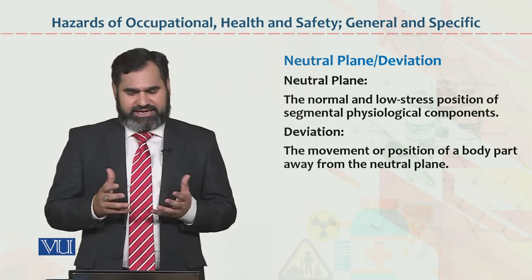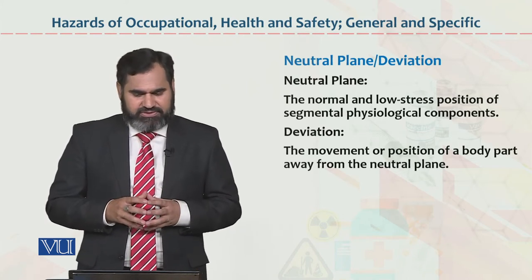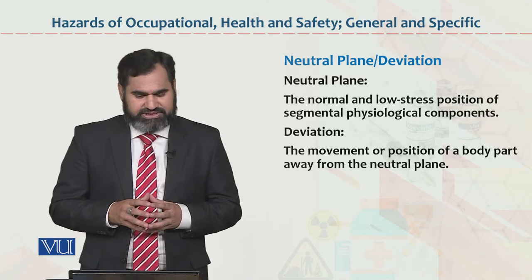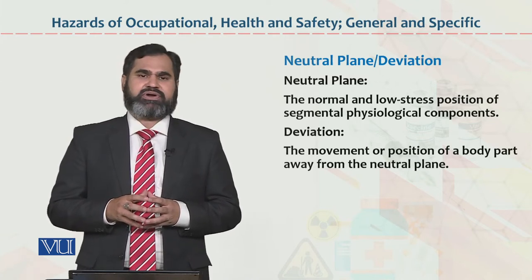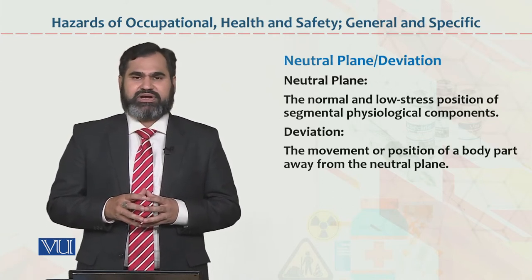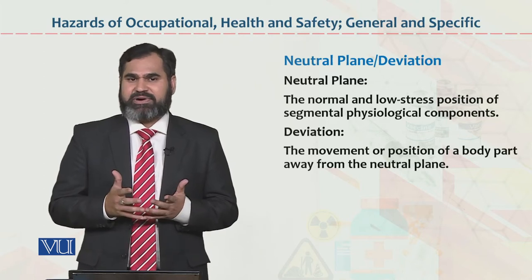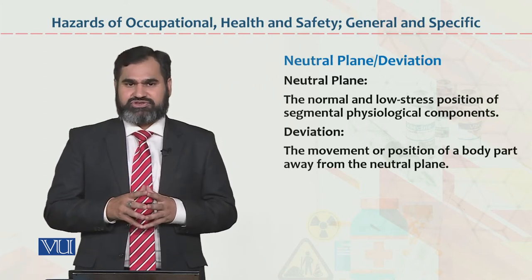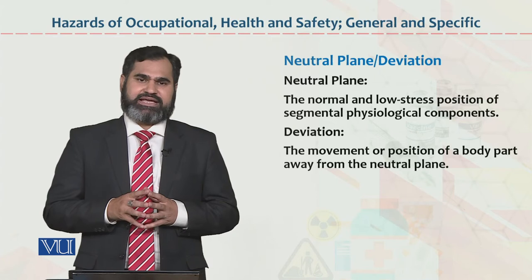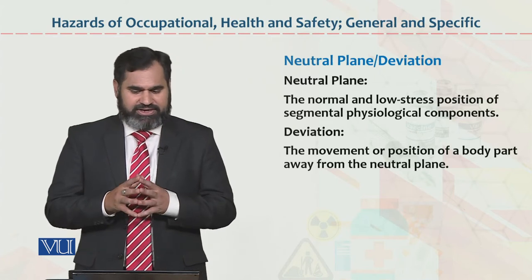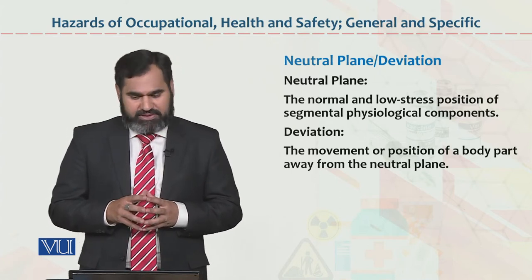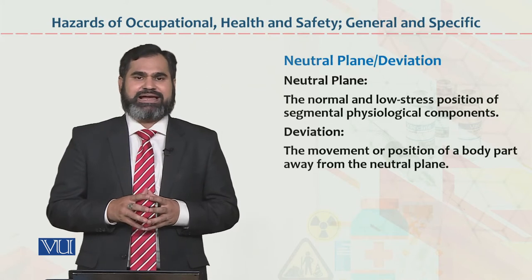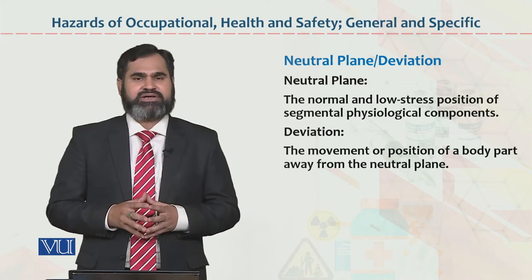Neutral plane and deviation. Neutral plane is the normal and low-stress position of the segmental physiological components — parts of the body — unki jo low-stress position hain, us ko neutral plane kehte hain. Or deviation: the movement or position of a body part away from the neutral plane is known as deviation.